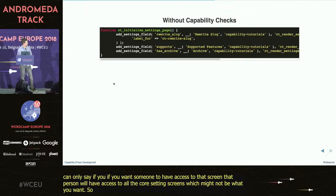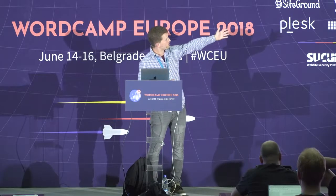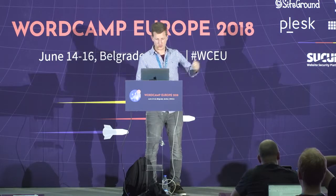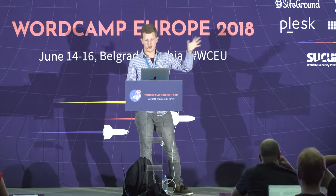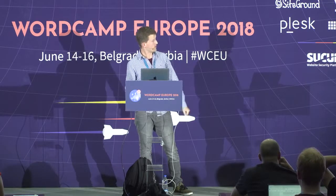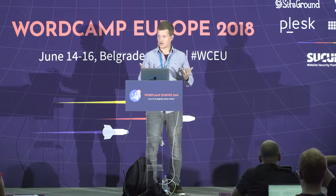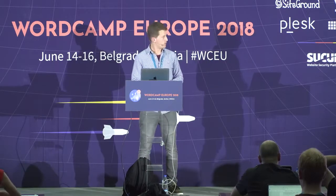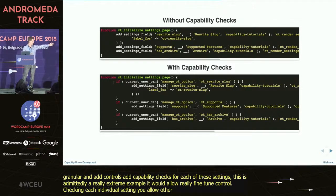We could become even more granular here. A good example for meta-capability checks is individual settings. A settings page using the Settings API could have a setting for the rewrite slug, for what the post type should support, whether the post type has an archive. By default, all these settings are accessible when you can access the basic screen itself. You could be really granular and add capability checks for each of these settings. This is admittedly a very extreme example, but it would allow really fine-tuned control about this screen, allowing other developers to say, for example, I want a user to only access one specific setting in this list.